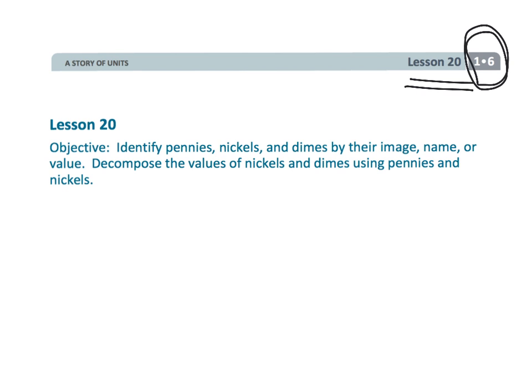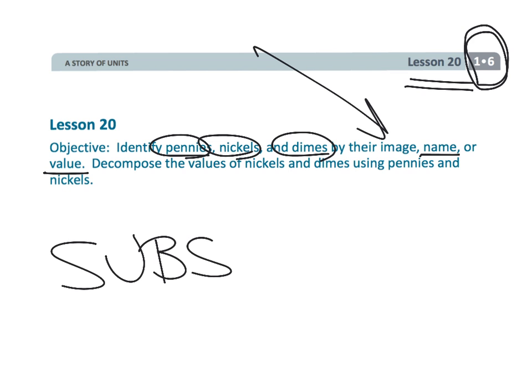And that wraps up a classic talking about coins with our first graders. First grade module six, lesson 20. We've began by identifying pennies, nickels, and dimes by their image. But then we also talked about their name. We talked about their value. We even did a little bit of math with them. And by the way, please consider subscribing to my channel.